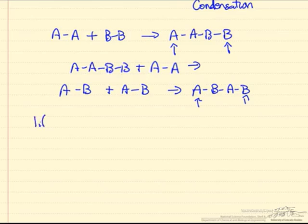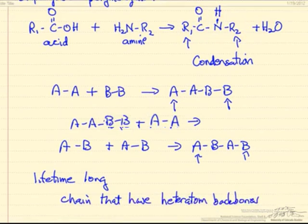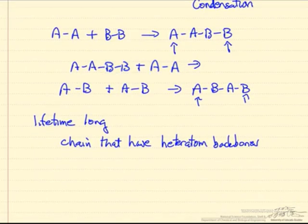Their lifetime is long if we want to contrast it to addition polymerization. And usually when we have these we have chains that form. So we form polymer chains that have heteroatoms. And what we mean by that is we have carbon and nitrogen in this chain that is going to continue to grow whereas many of the addition polymerizations for example may be all carbon atoms in a structure.